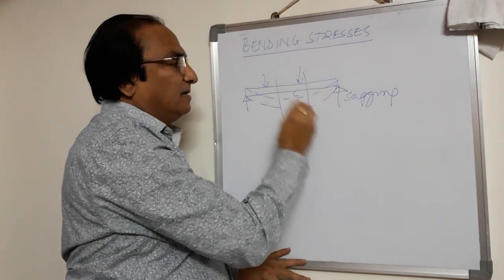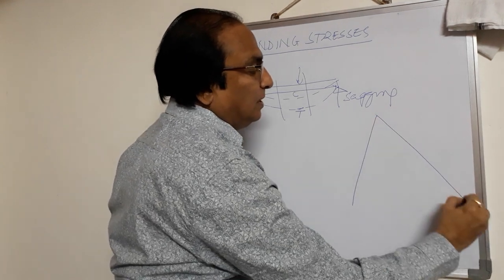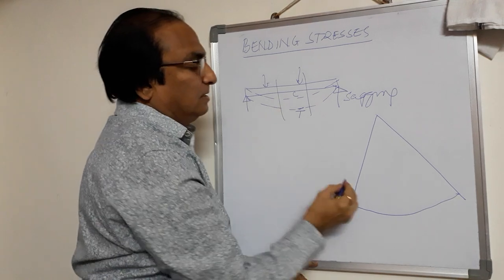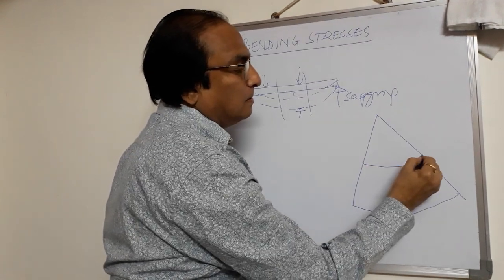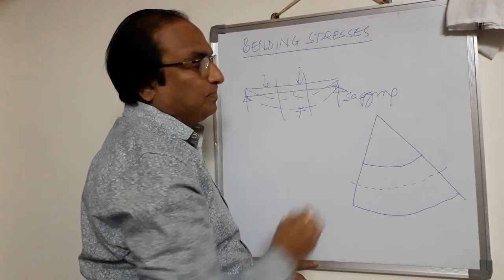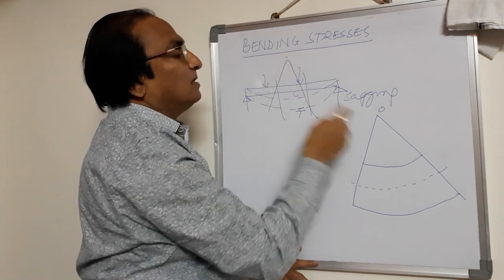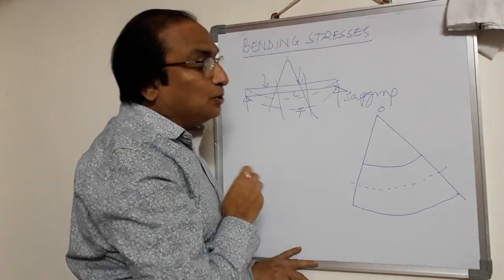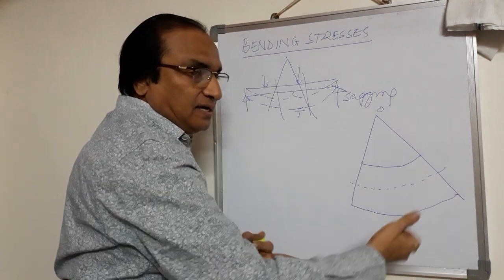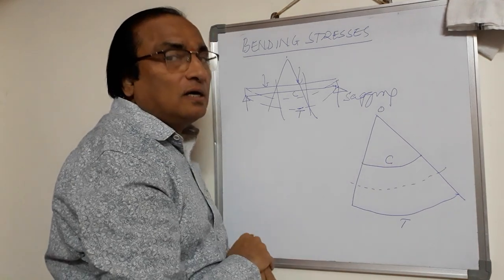Suppose if I take a small portion and magnify that part here in the bent form, you get that this is the lower part, this is the upper part, and this is the layer in between. This is the center of the curvature. If it bends like this, the bottom fibers are subjected to tension because they are stretching, and the top fibers are subjected to compression because they are getting compressed.